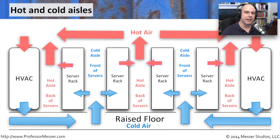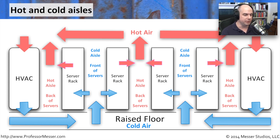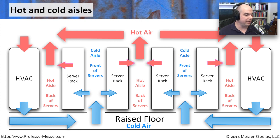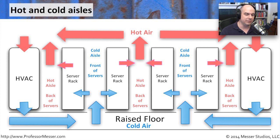When we talk about hot aisles and cold aisles, we're talking about the way that we're engineering our data centers — where we're putting our servers, in which rack, and what direction in the rack we're putting our servers. If we think about the cooling system in a data center, we've got these HVAC units — I put one on both sides of this picture. And this is a side view of all of the racks that you have.